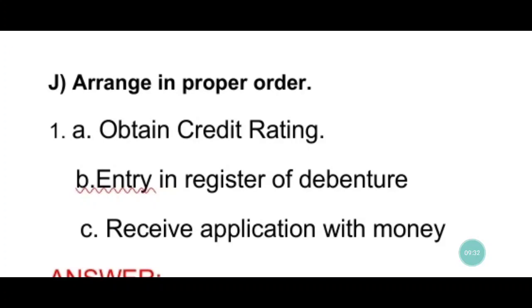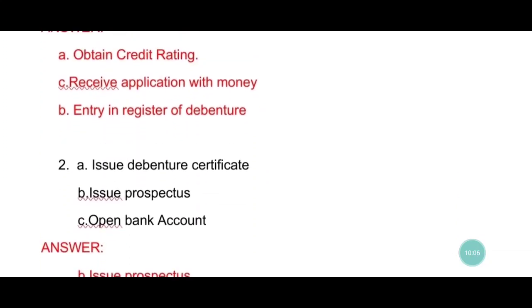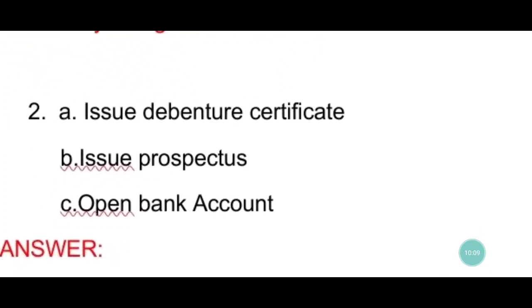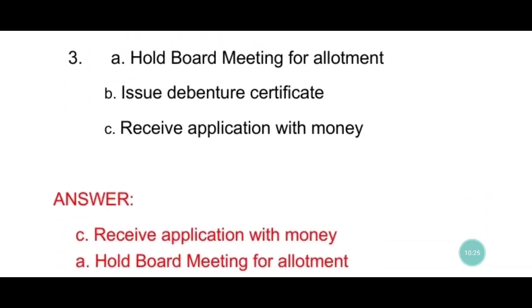The procedure for issue of debenture is: first, resolution passed in board meeting; then hold extraordinary general meeting; then filing with register of companies; then opt in credit rating; then enter into underwriting agreement. So for the first set, the answer is: first opt in credit rating, then receive application with money, then entry in register of debenture. For the second set — issue debenture certificate, issue prospectus, open bank account — the order is: first issue prospectus, then open bank account, then issue debenture certificate.